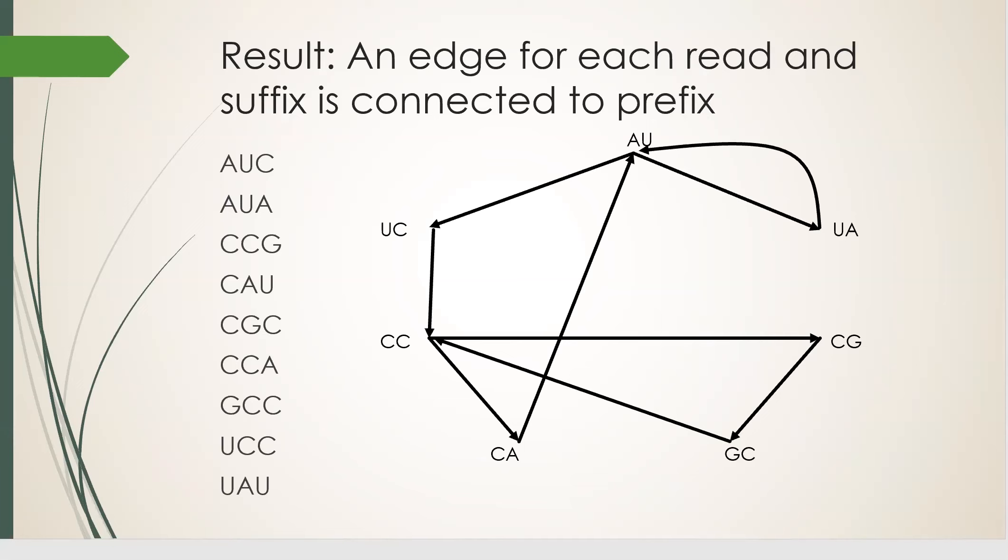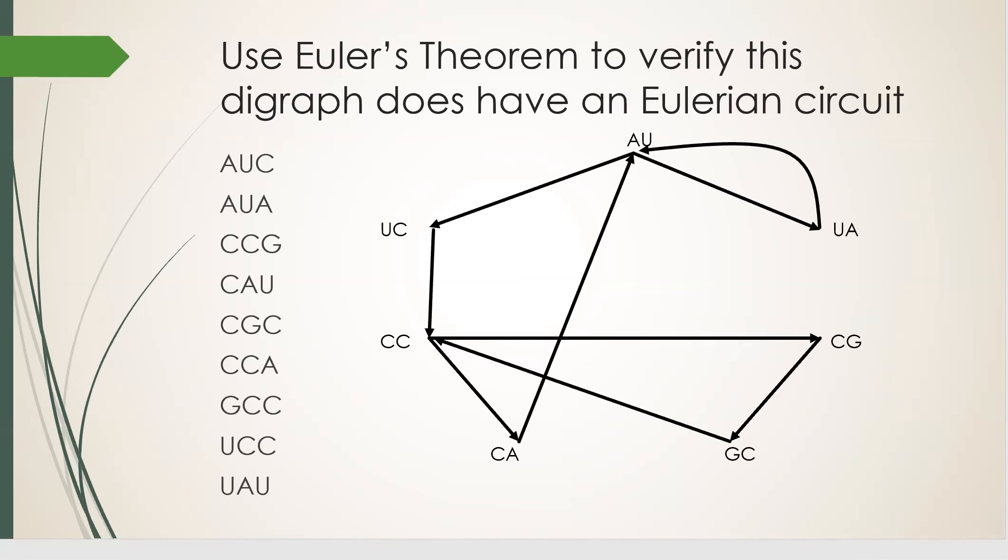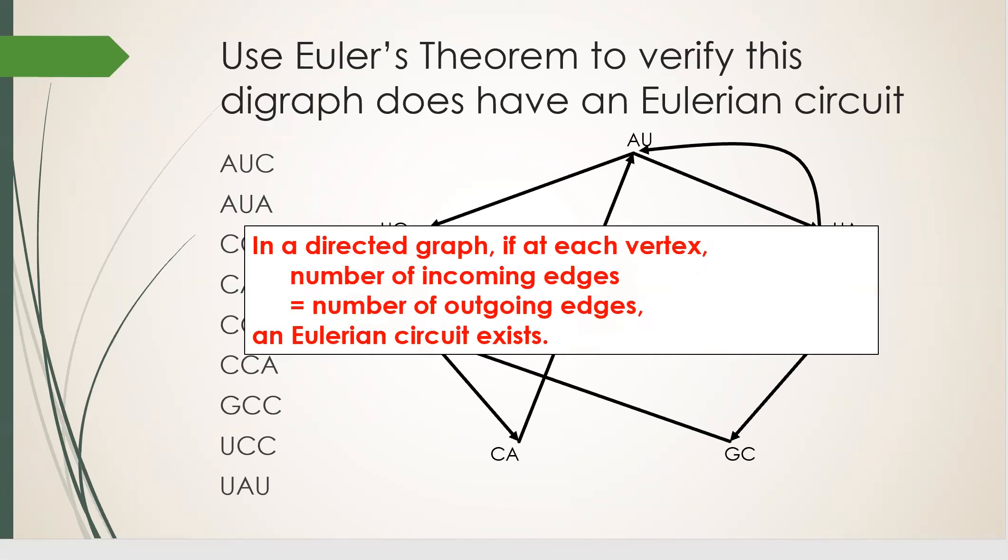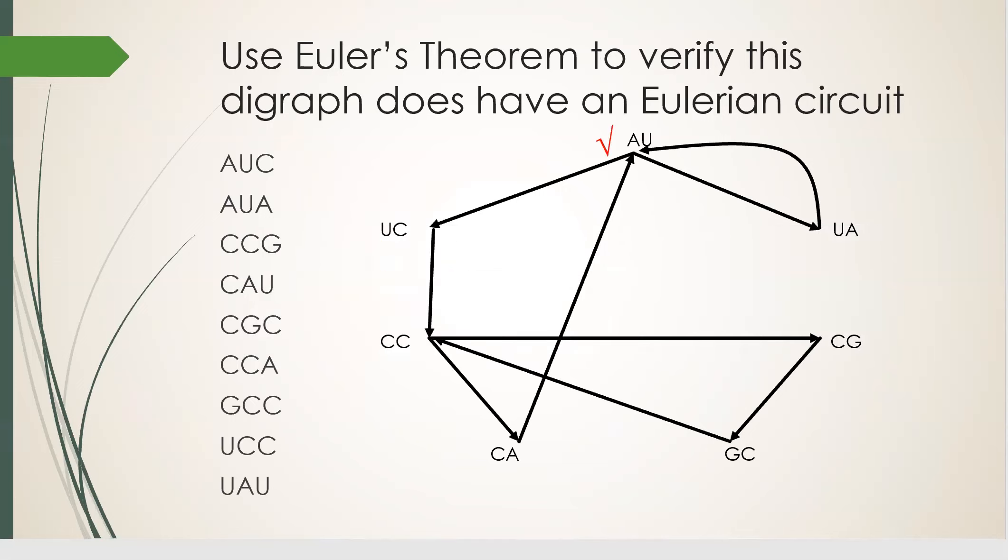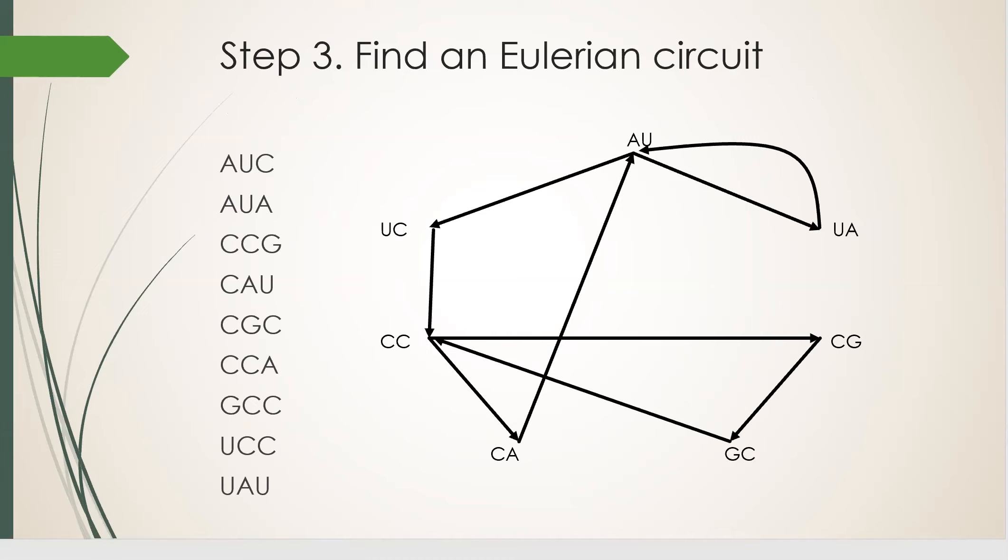Now we use Euler's theorem to verify that this directed graph does have an Eulerian circuit. The theorem says we have a Eulerian circuit if and only if at each vertex, the number of incoming edges equals the number of outgoing edges. So we check. The first one is good. It has two incoming and two outgoing. And we check the rest of them. All good.